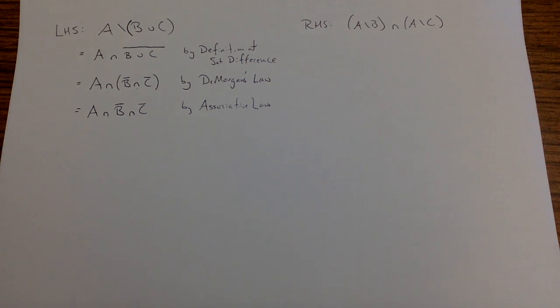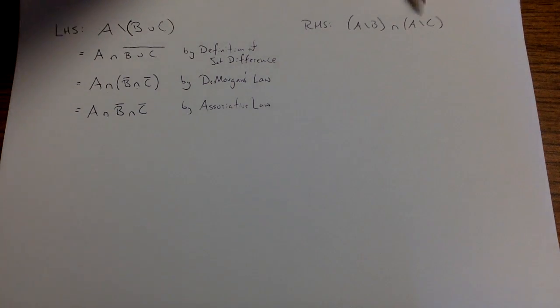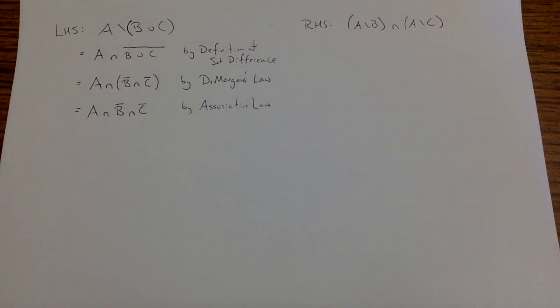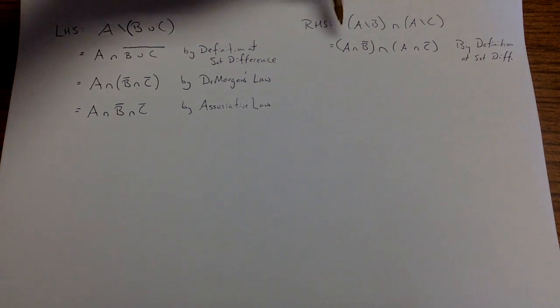So let's try the right-hand side and see what happens. When I'm on the right-hand side, I'm going to see that I have two set differences, so I'm going to replace them by using the definition. So applying the definition of set difference, I see that I have A intersect B complement, intersect A intersect C complement.